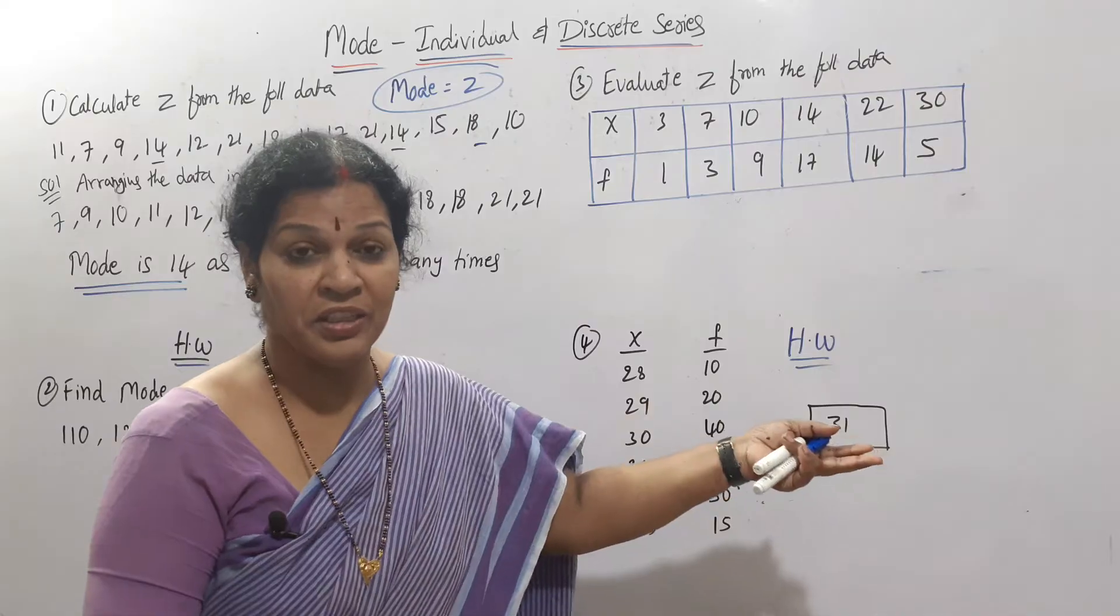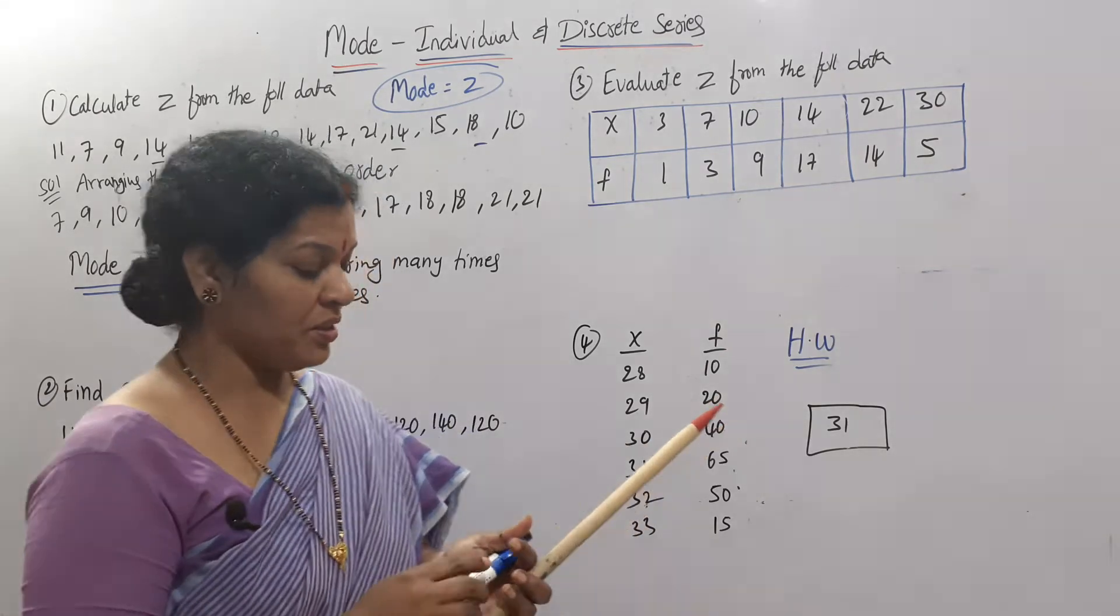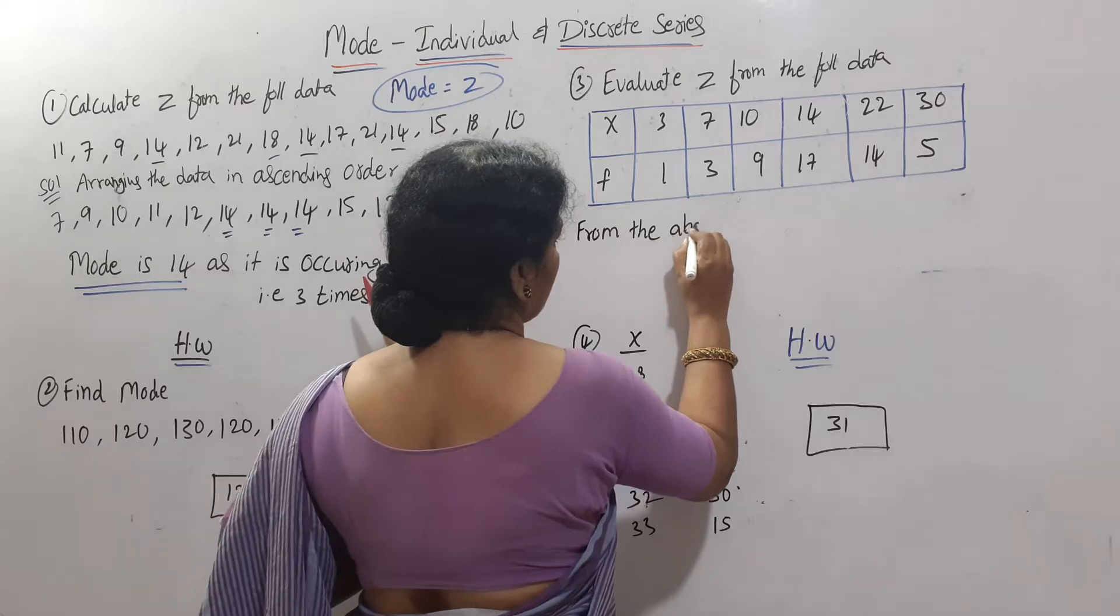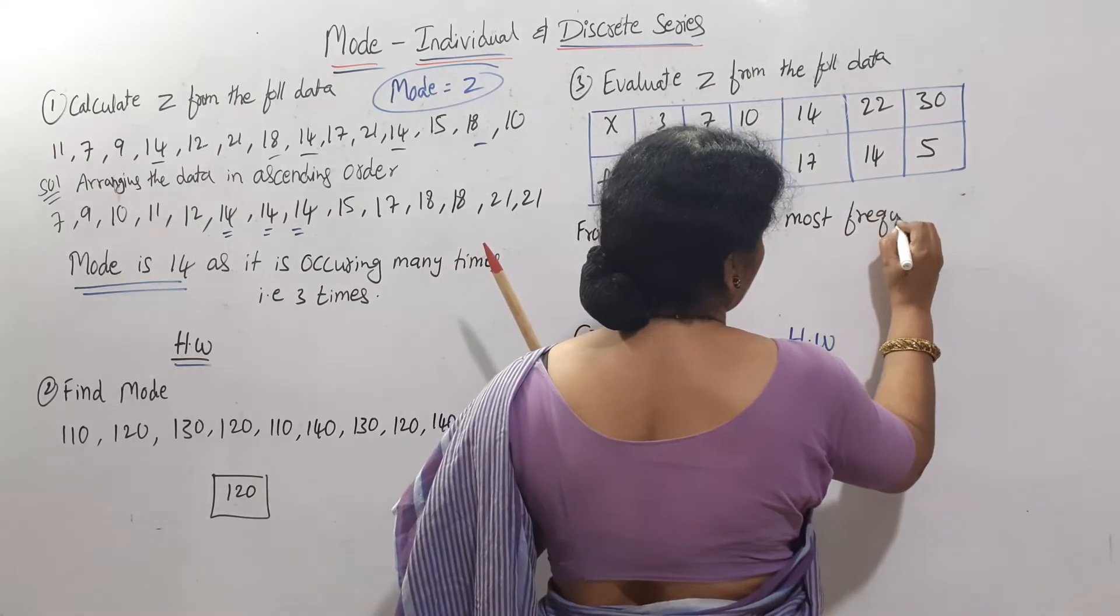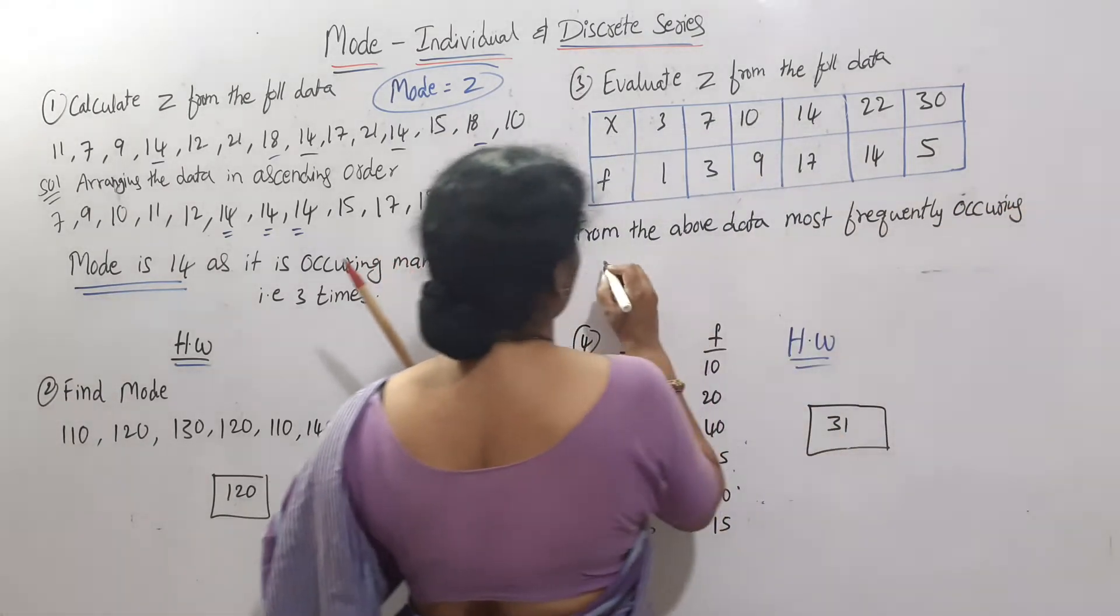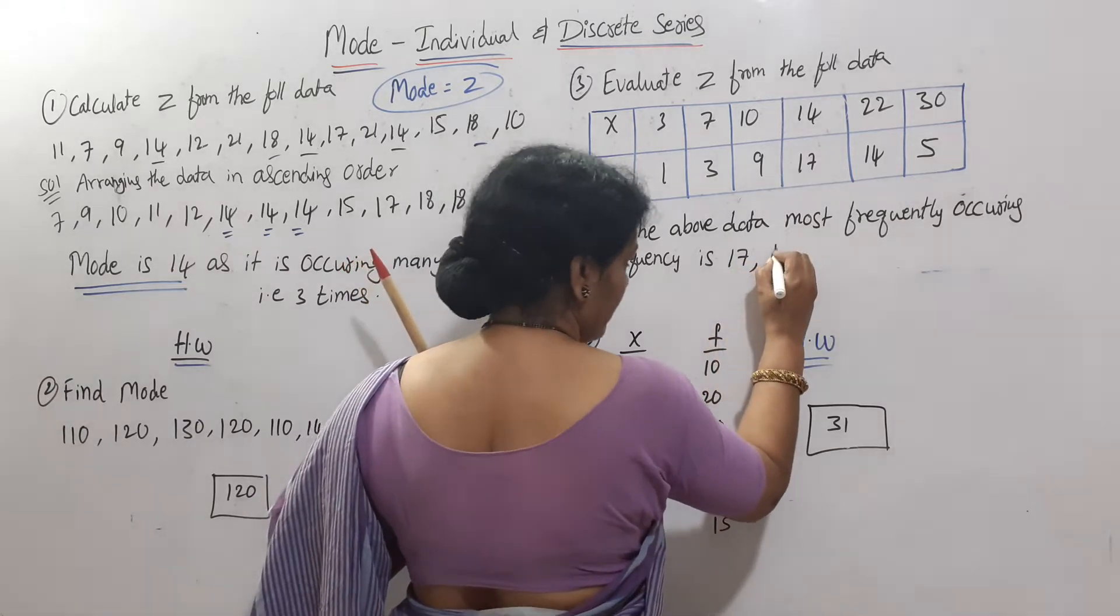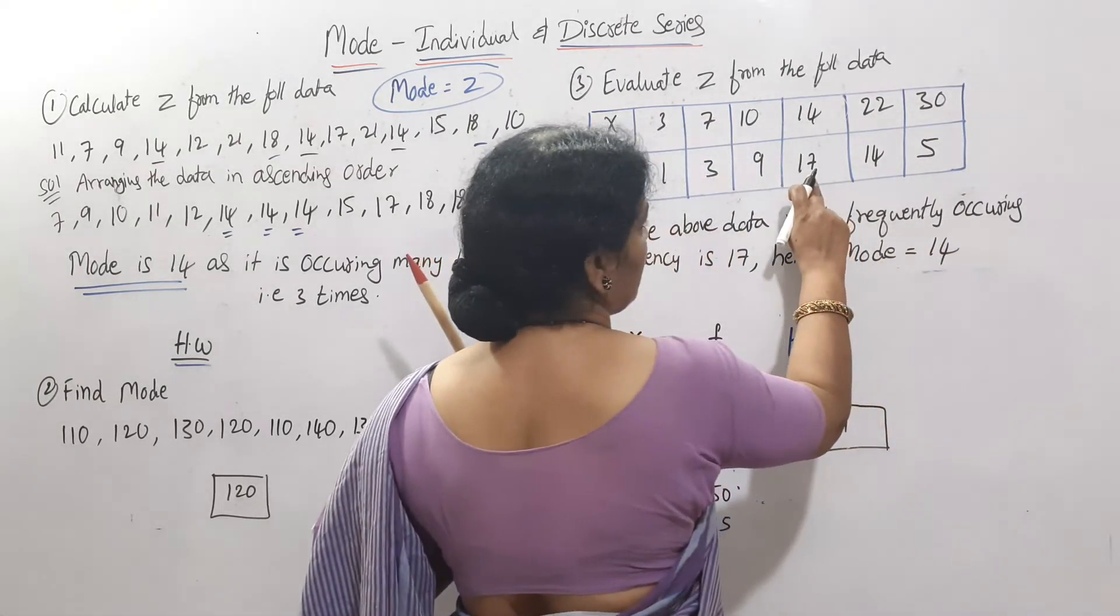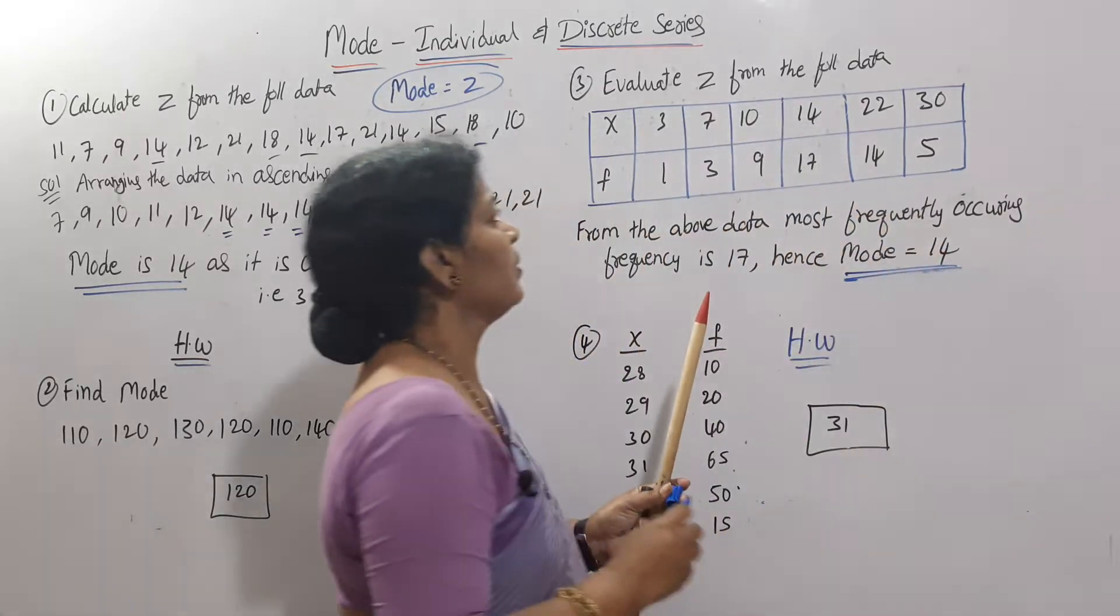We can't say 17 is mode - 17 is the frequency. What is repeated? 14 is repeated. So mode is 14. Now we can write one sentence: From the above data, the most frequently occurring frequency is 17, hence mode is 14.